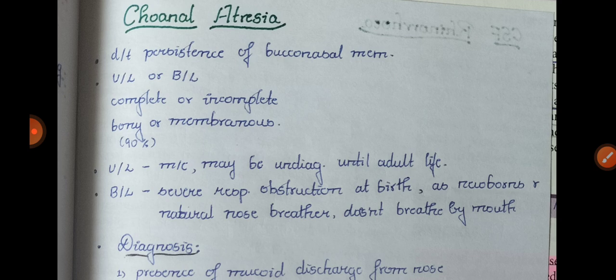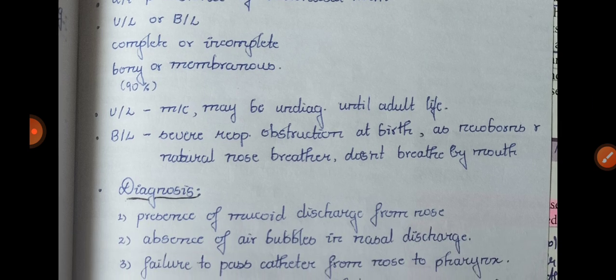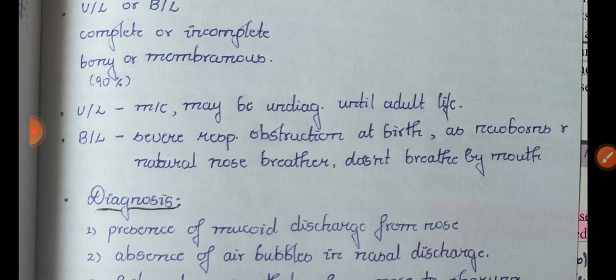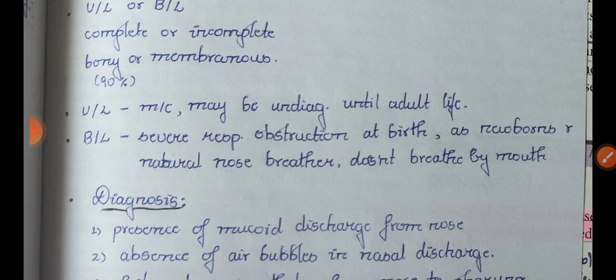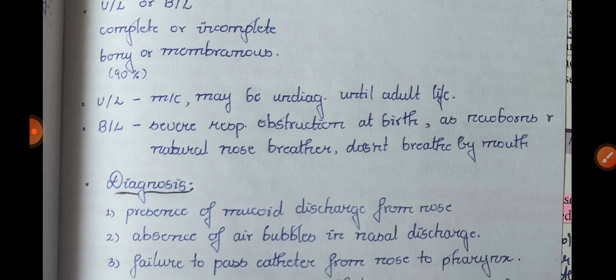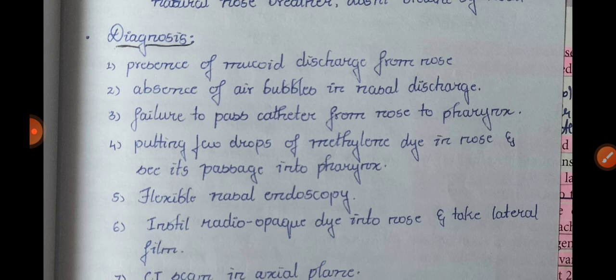The bucconasal membrane can be bony in 90% of patients and membranous in 10%. If unilateral, it may be undiagnosed until adult life. If bilateral, it causes severe respiratory obstruction at birth, as newborns are natural nose breathers and do not breathe by mouth. Mouth breathing develops only a few days later, so they have severe nasal respiratory obstruction.